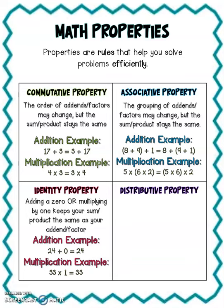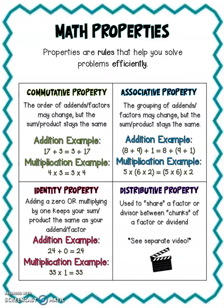So adding a 0 or multiplying by 1 keeps your sum or your product exactly the same. Now the distributive property is used to share factors or divisors between chunks. We're going to look at that more closely in a separate video. But I wanted to give you a quick refresher of the commutative, associative, and identity properties because you'll be using those all throughout the year. Thanks for watching!